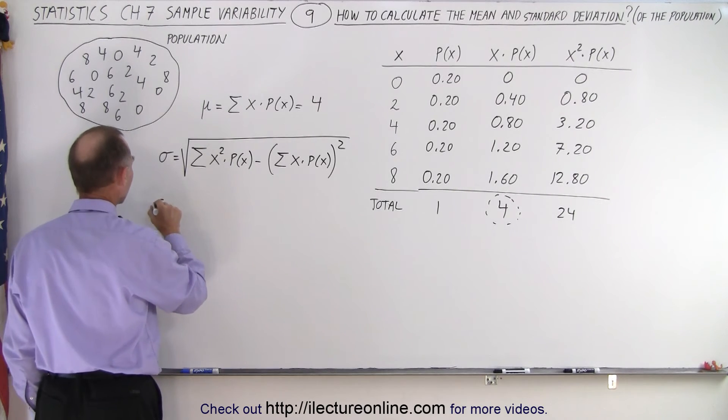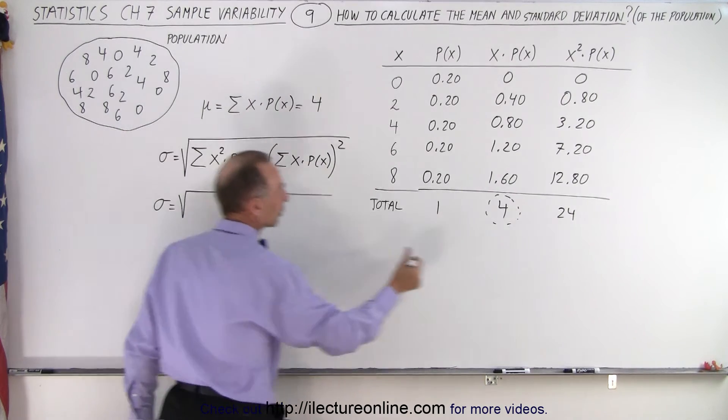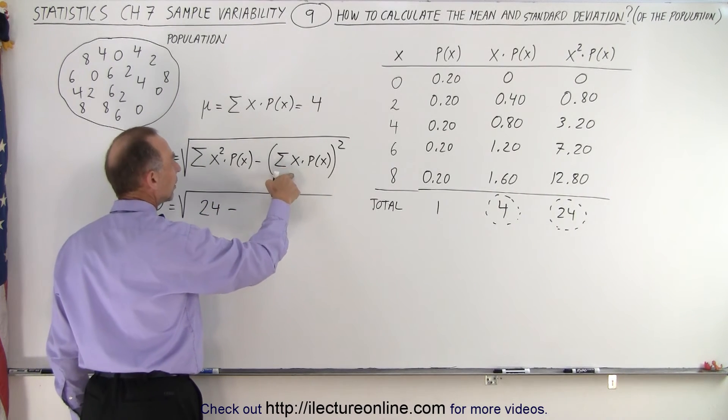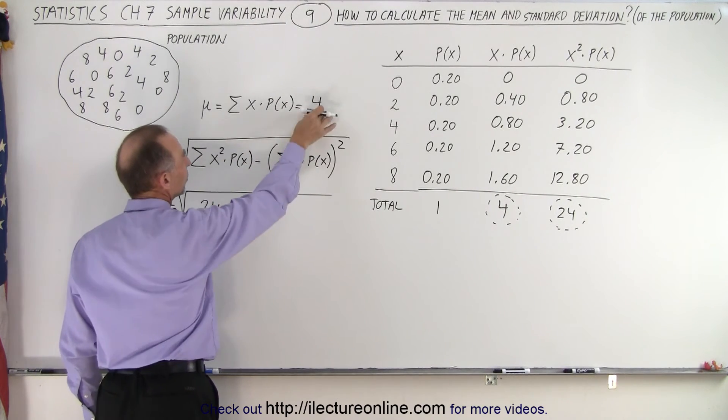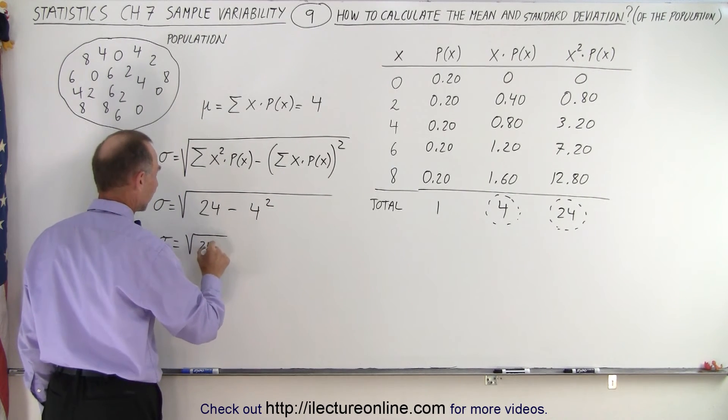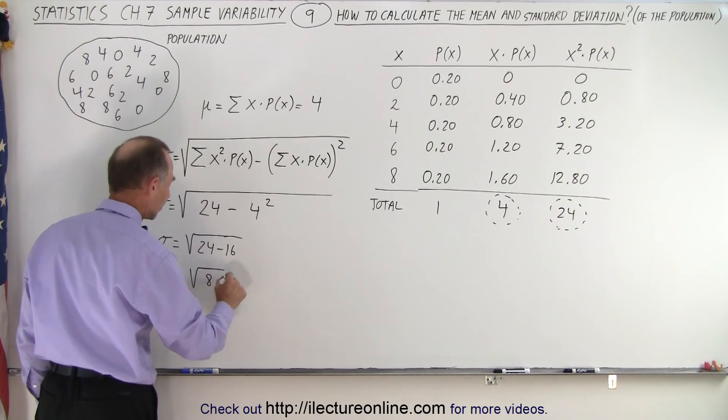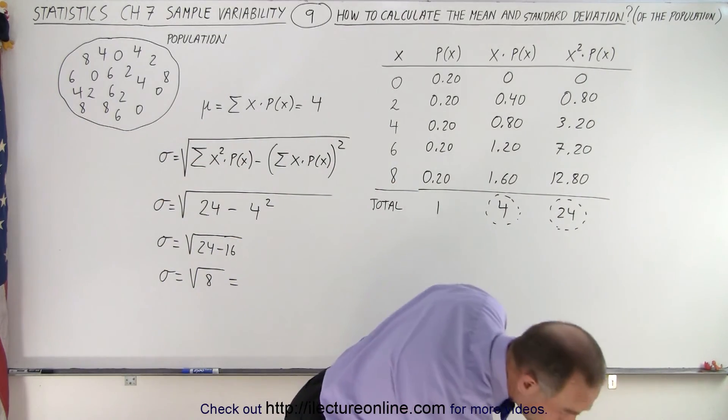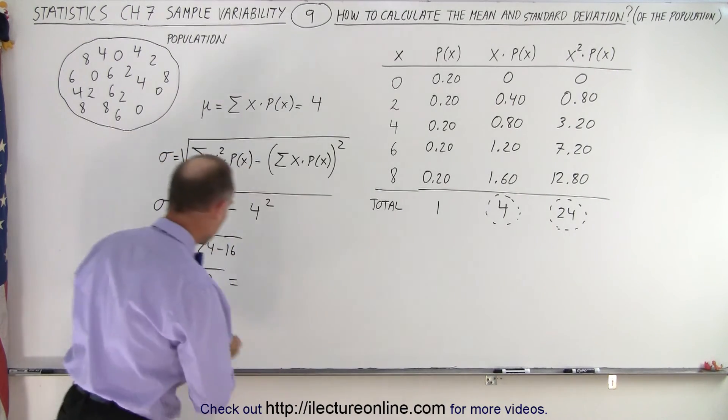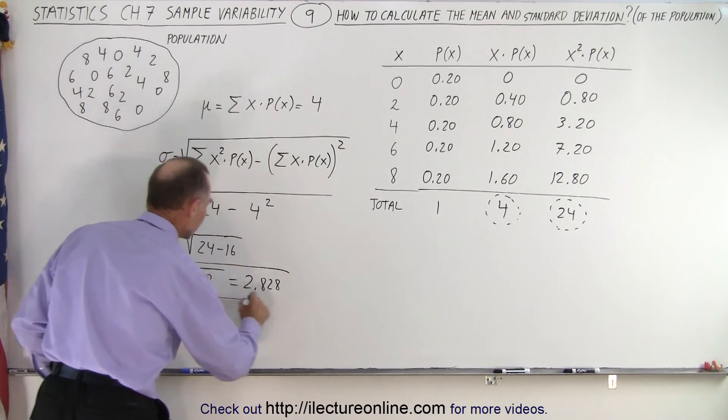Okay. So sigma is equal to the square root of, so this we already worked out, that's equal to 24, minus this quantity squared. Now this is the same as this, so that would be 4 quantity squared. So sigma, the standard deviation, is equal to 24 minus 16. So sigma equals the square root of 8. And I need a calculator for that one. 8, take the square root of that, which is 2.828. 2.828, which gives us the standard deviation of the population.